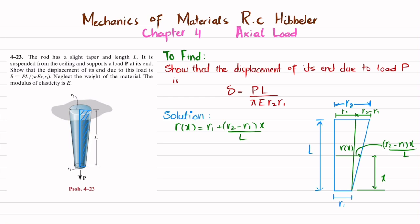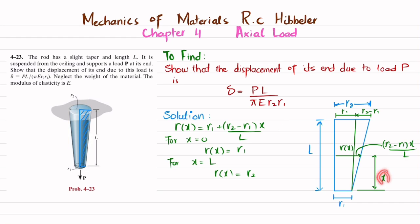For a check, put X equal to 0: this term becomes 0 and R(x) equals R1, which is correct. Now for X equal to L: substituting gives R(x) equal to R2. This confirms our radius function R(x) is correct — at any distance X from the small end, we can find the radius.